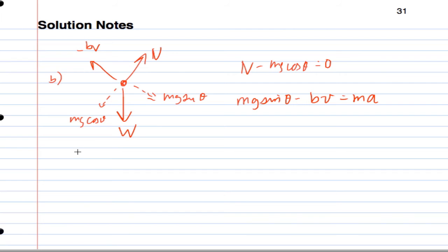And this is where we get to the point where we're actually going to write our differential equation. And that's going to be Mg sine theta minus BV equals M dV dt.